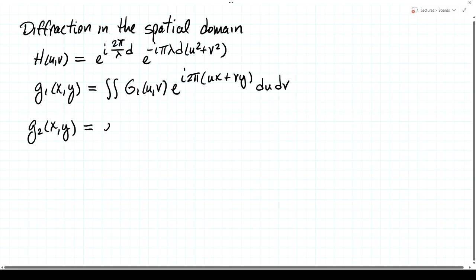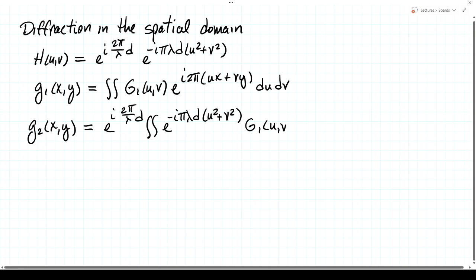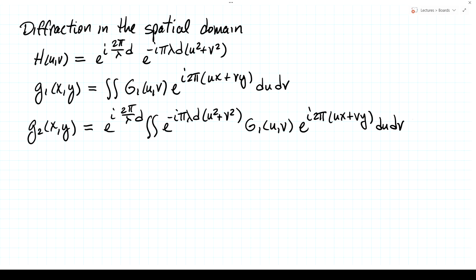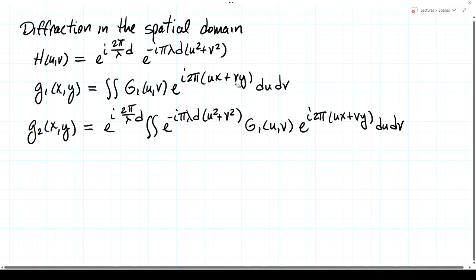So the output field is: e to the i 2 pi over lambda d, times an integral of e to the minus i pi lambda d times u squared plus v squared, times the original angular spectrum g1 of u and v, times the linear phase factor e to the i 2 pi times ux plus vy, integrated over du dv. That is the process of diffraction described in the spatial frequency domain, where u and v are spatial frequencies.